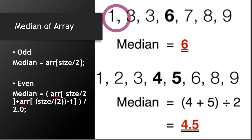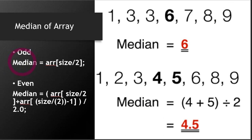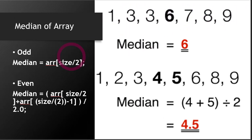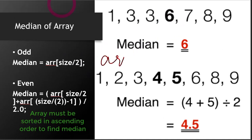Let's take this example. This array has one, two, three, four, five, six, and seven elements — seven elements, which means the count is odd. So if the count is odd, the formula for median is: you divide the size by two. The size here is seven, so seven divided by two equals 3.5, and we only consider the integer part, not the floating point part. So seven divided by two equals three. You have to find what is there at the third index.